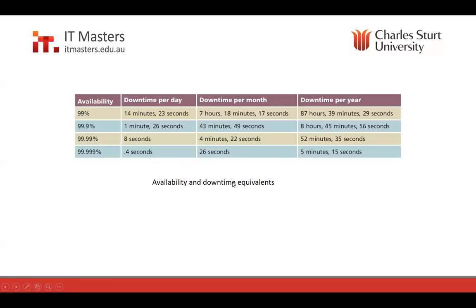Five nines is what we commonly quote. If we say our systems are 99% available, they have 14 minutes and 23 seconds of downtime per day, or 87 hours of downtime per year — which is quite high and would not be considered acceptable for a large company. The industry de facto standard is 99.999%, giving us downtime of just 0.4 seconds per day, 26 seconds per month, or five minutes and 15 seconds per year.